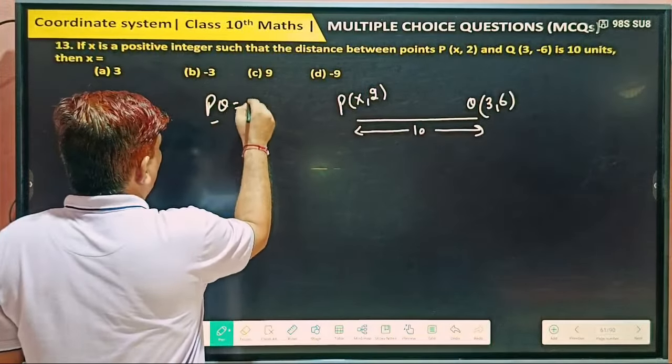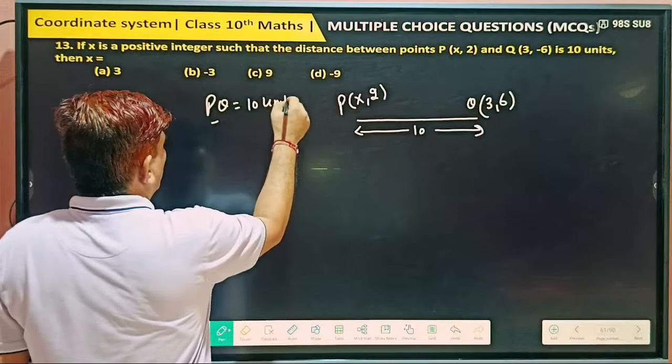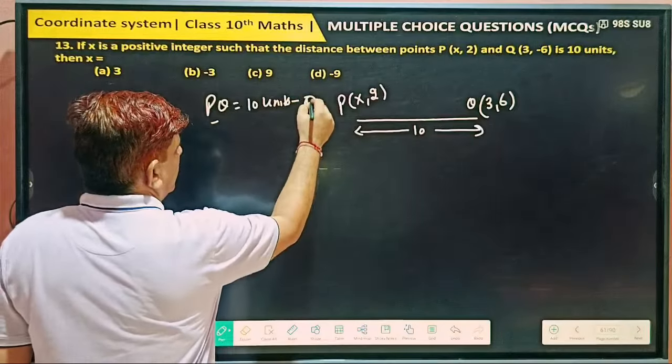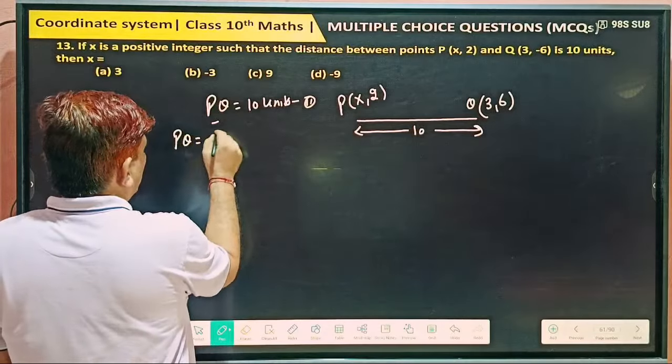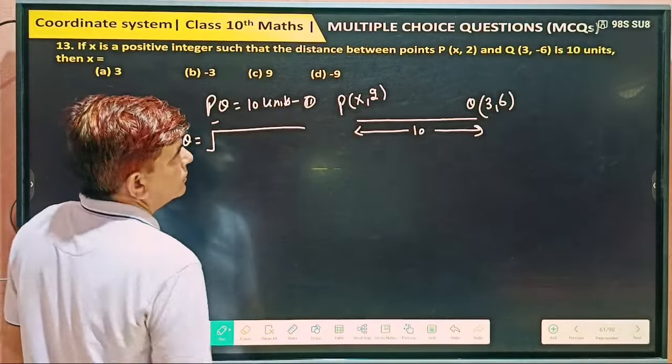And this distance is how much? 10 units. This is point Q. So what's given here? PQ equal to 10 units given.